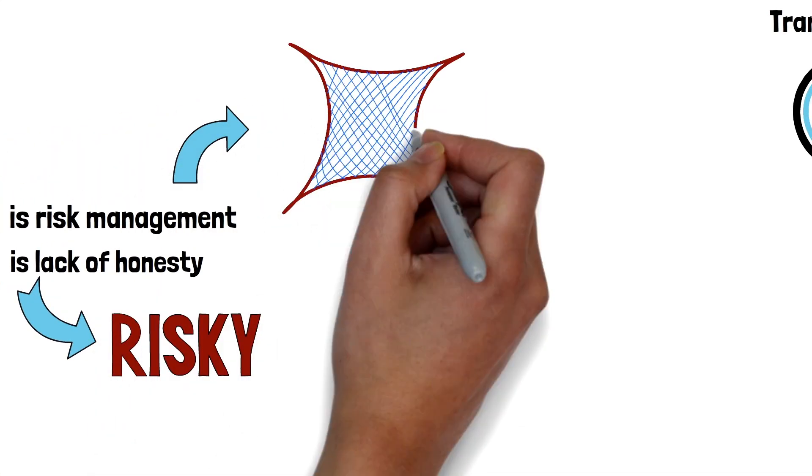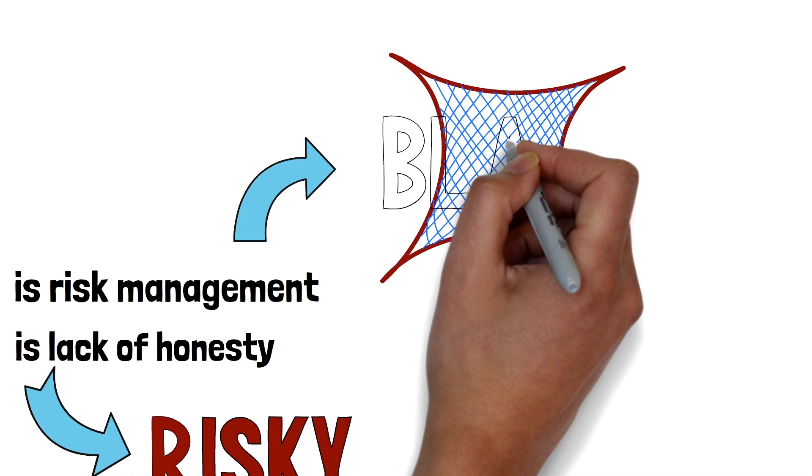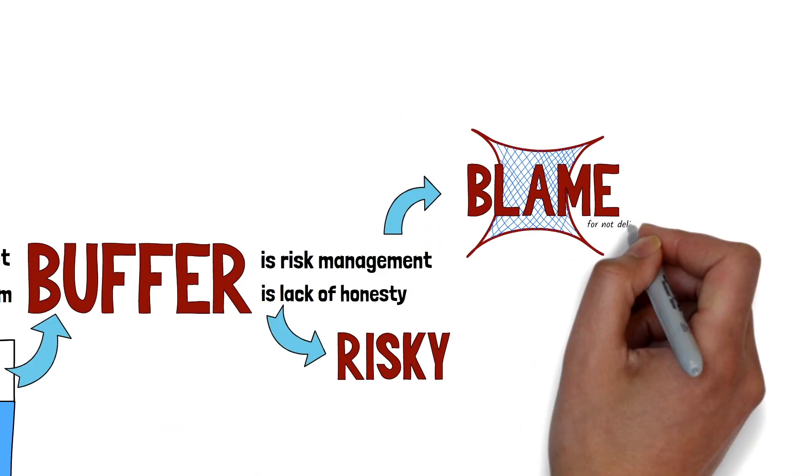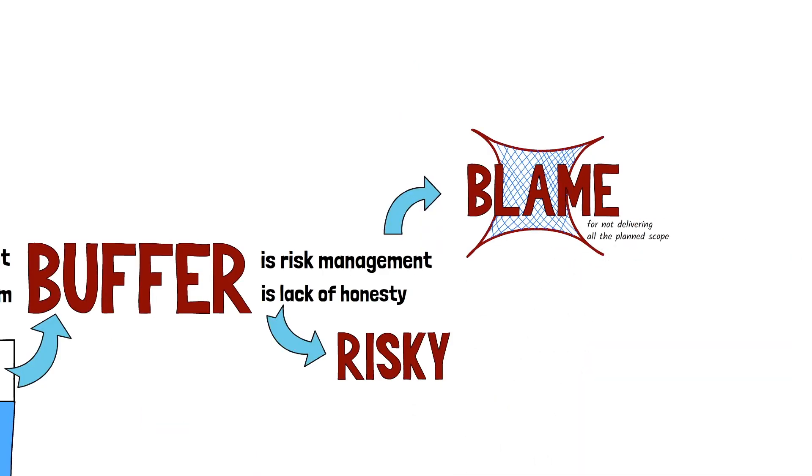Many Scrum practitioners bring a project management mindset and add buffers to the sprints because they think that by adding buffers they are putting a safety net that will protect them from getting blamed if they cannot deliver all of the planned scope. The purpose of a sprint is not to deliver a fixed scope but to achieve a sprint goal. This is a big difference, because you can achieve a sprint goal without delivering all of the planned scope.